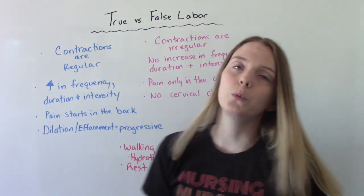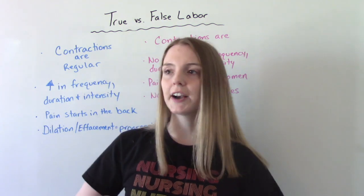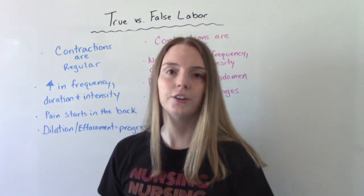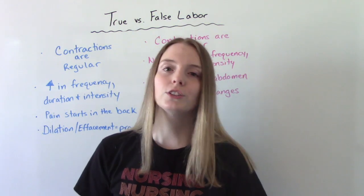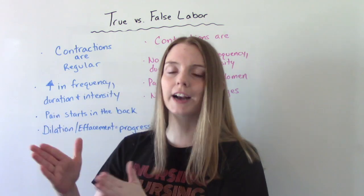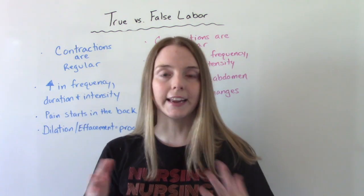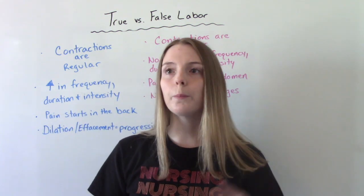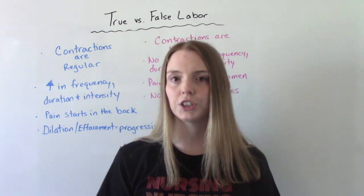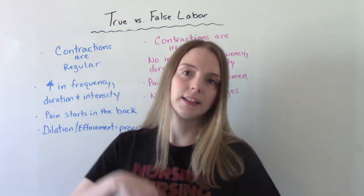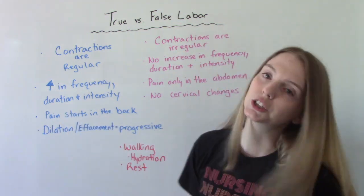The contractions will also increase in frequency. So maybe you're having contractions every 10 minutes, then later on every 6 minutes, then every 2 minutes. The time between contractions will get shorter if you're in real labor. The duration — how long each contraction lasts — will also get longer. They might first last 20 seconds, then as you get into true labor they might last 60 or 90 seconds.